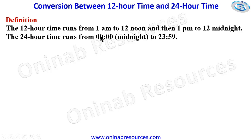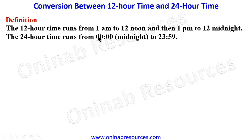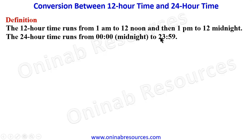The 24-hour time runs from 0000 midnight to 23:59. Instead of reading midnight as 12 midnight, it is read as 0000. The time starts at 0000. A minute before midnight — if you add 1 minute, instead of going to 24 hours, it goes back to 0000, which signifies the 24-hour timing.